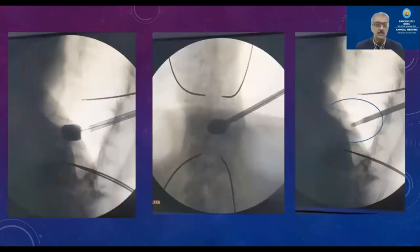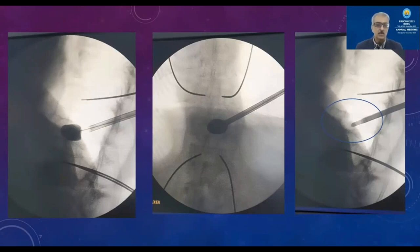Remove the reamer and pass the kyphoplasty balloon. The balloon is expanded with an omnipaque solution. Endpoints for expansion include: restoration of vertebral height, reaching the maximum volume the cavity can accommodate, achieving maximum pressure — approximately 150 psi for acute fractures and around 300 psi for old chronic fractures — or until flush against the pedicle wall. Ensure you do not damage the posterior wall or the endplates.